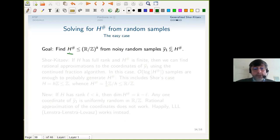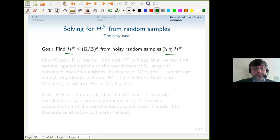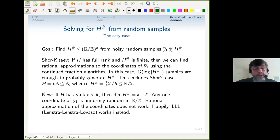So the goal is to find H^♯ from noisy random samples. If H is full rank, H^♯ is discrete, so we can find rational approximations to the coordinates of y_1 using the continued fraction algorithm. y_1 is an approximation to something nailed in place. Then a logarithmic number of samples are enough to probably generate H^♯—on the scale of the bit complexity—and this includes the Shor case.